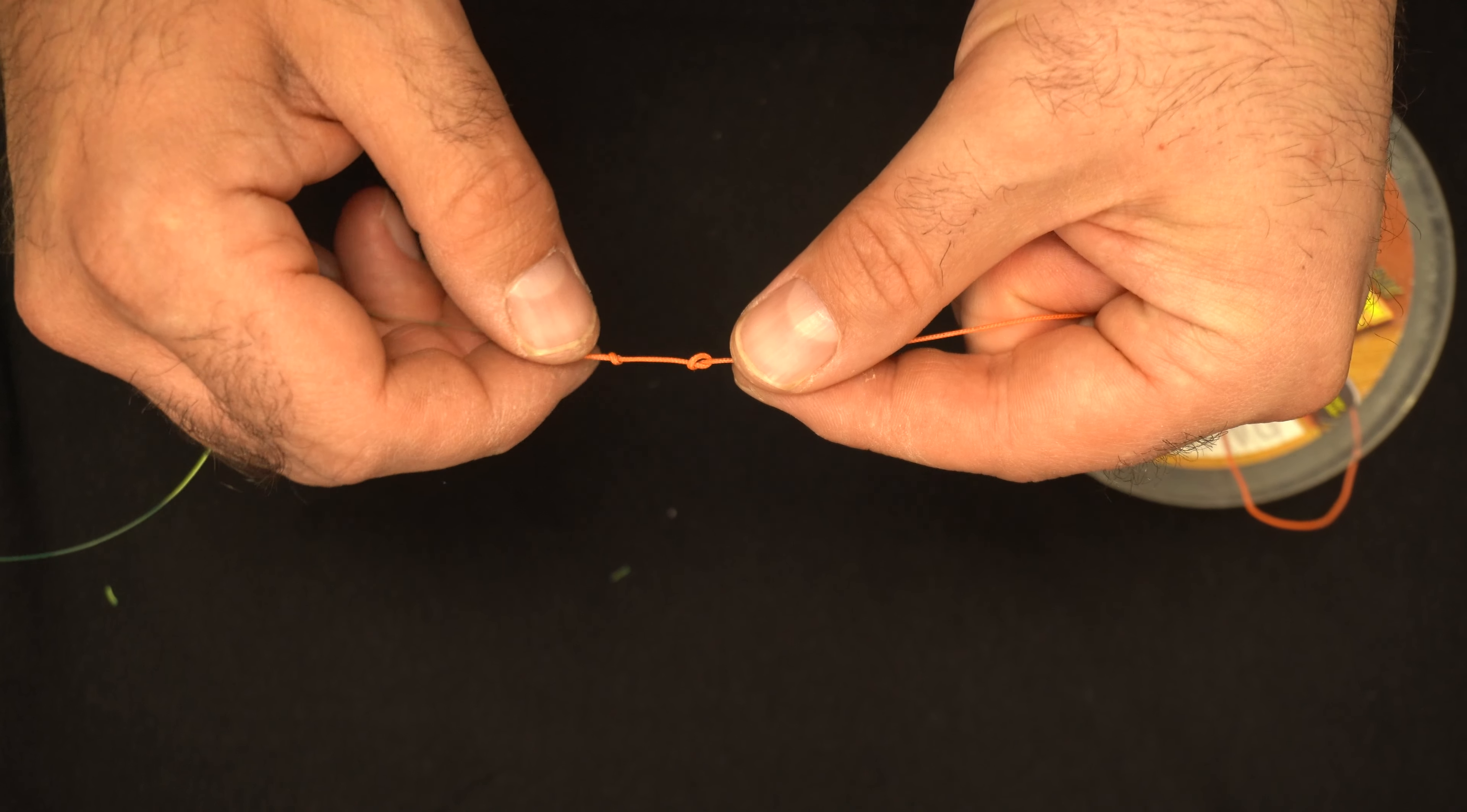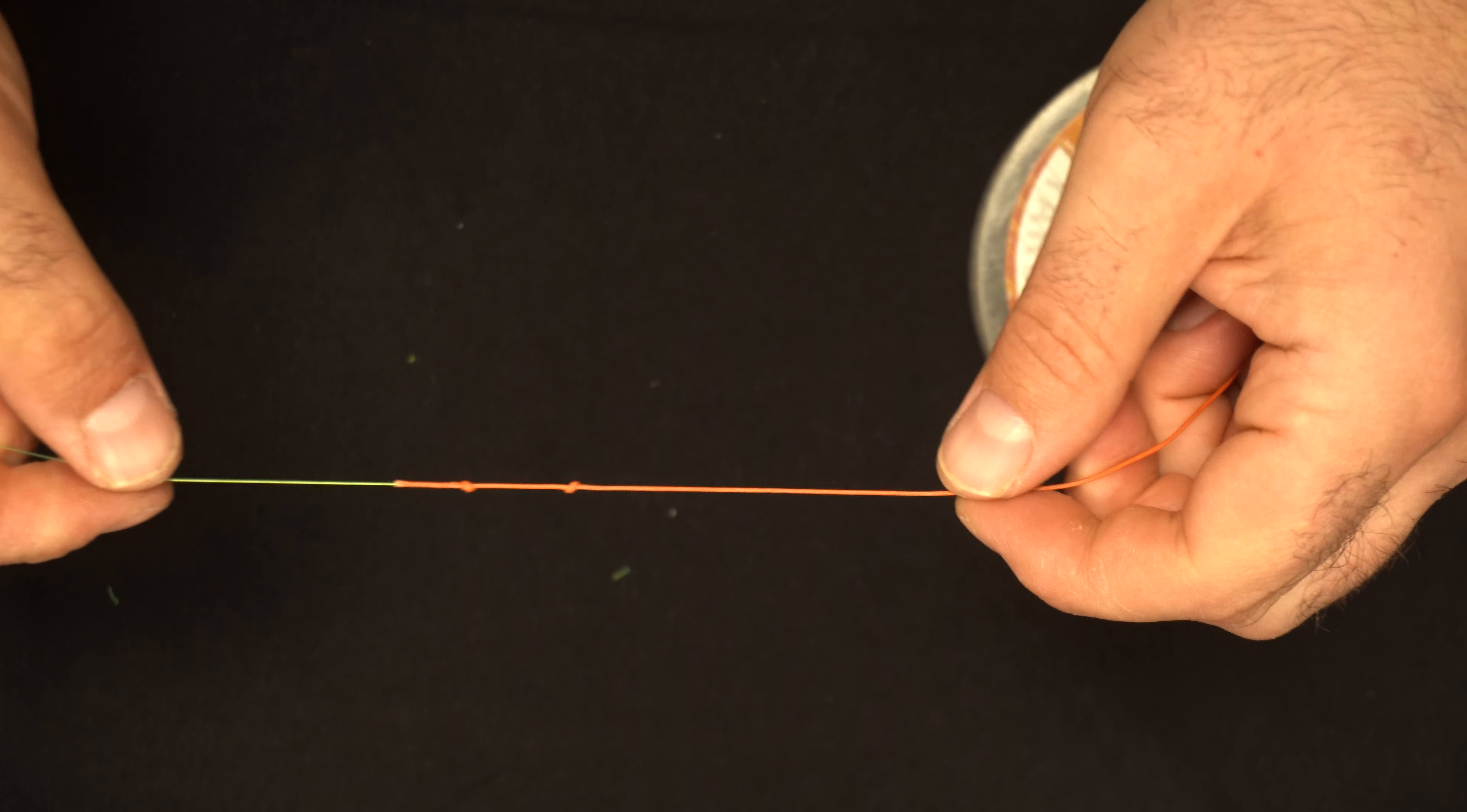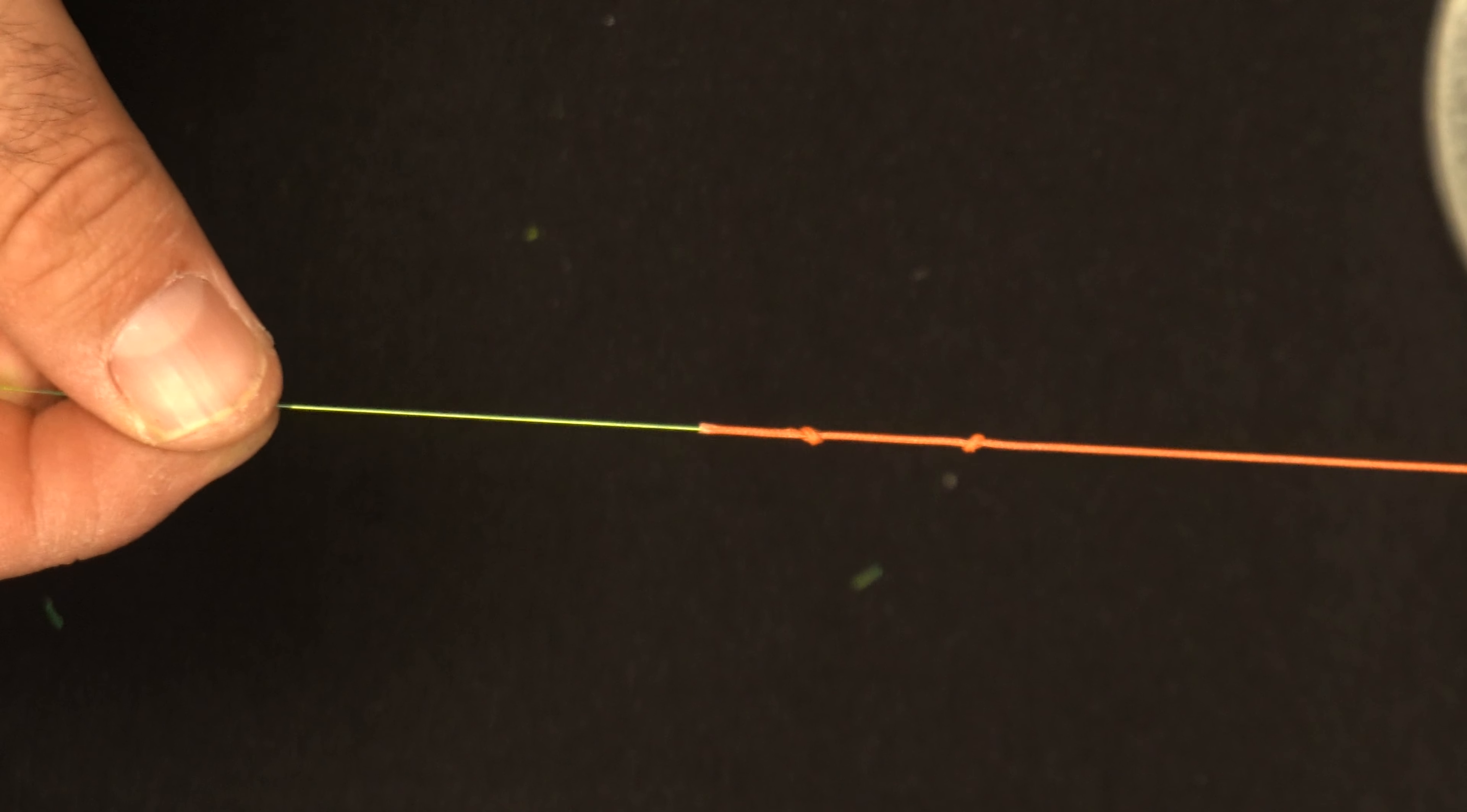There's a couple ways to tie lead core together. This particular knot passes through your line guides as well as the guides on your rods. Makes a really nice strong connection.